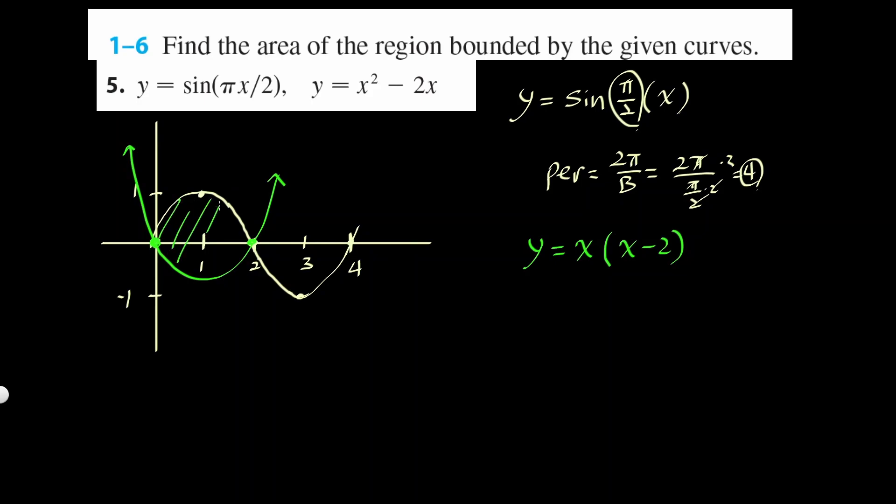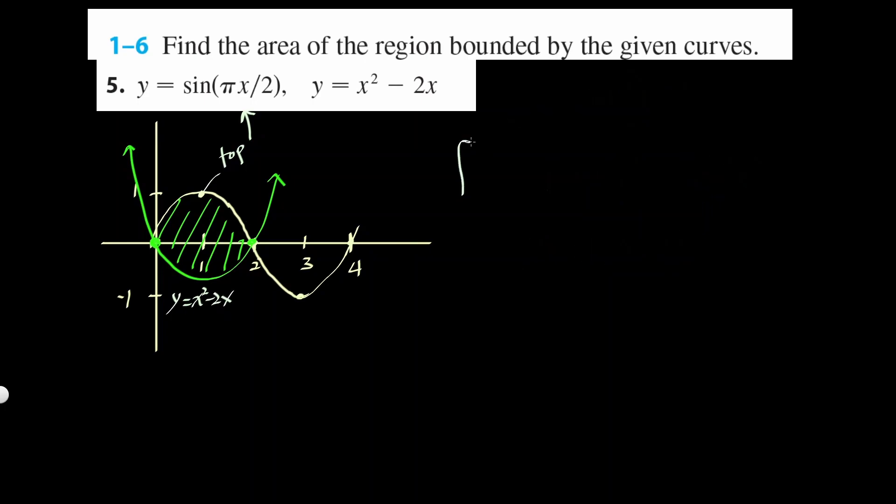So this portion will be bounded. And the top will be, this is the top. We're going to do top minus bottom, which is this one right there. And the bottom one is y equals x squared minus 2x. So let's integrate it from 0 to 2, because we're going from left 0 and then right 2.